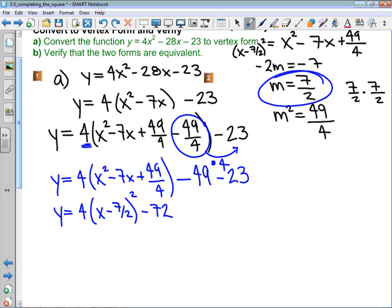Now, really what we're saying in this question is y equals 4 times x minus 7 half squared minus 72 is the same function as y equals 4x squared minus 28x minus 23. They sure don't look like they're the same function.